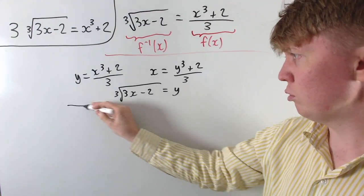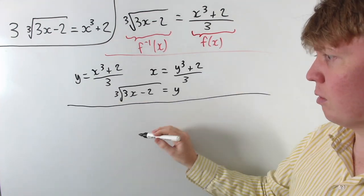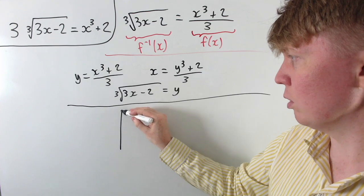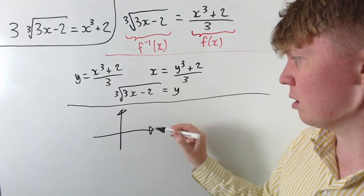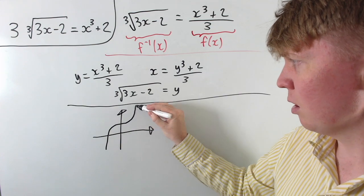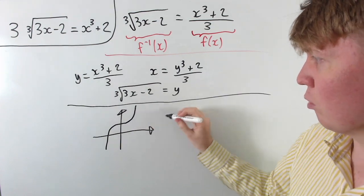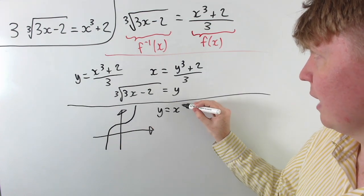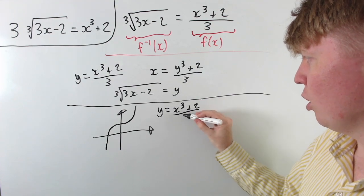So how does this help us? If we draw a sketch of each of these functions, so first of all if we draw a sketch of y equals f of x, this is a cubic which is going to look like this sort of picture. So this is a graph of y equals x cubed plus 2 over 3.